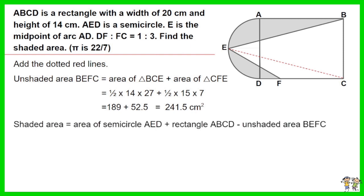The shaded area equals area of semicircle AED plus rectangle ABCD minus unshaded area BEFC. Area of semicircle AED equals half times 7 times 7 times pi. Area of rectangle ABCD equals 20 times 14.